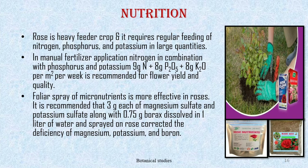Nutrition: rose is a heavy feeder crop and requires regular feeding of nitrogen, phosphorus, and potassium in large quantities. When nitrogen is deficient, young leaves become small, develop pale green color with yellow and red tints, and buds develop poorly. A high nitrogen dose is more effective for increasing stem length, flower yield, and quality. Phosphorus is important for encouraging root growth and stimulating flowering; it can be applied in the form of superphosphate and phosphoric acid. Its deficiency symptoms in rose are blue-green or dark green leaves, weak stems, and slow bud development due to poor roots.